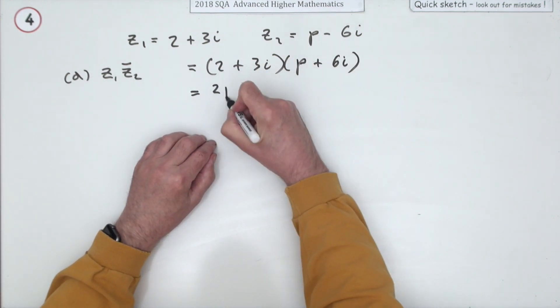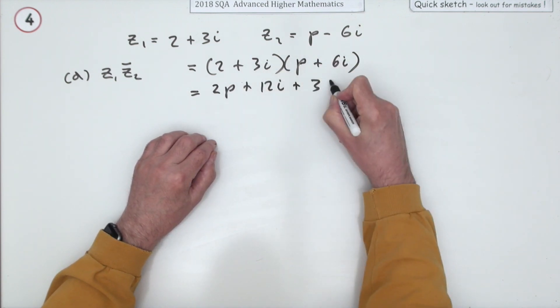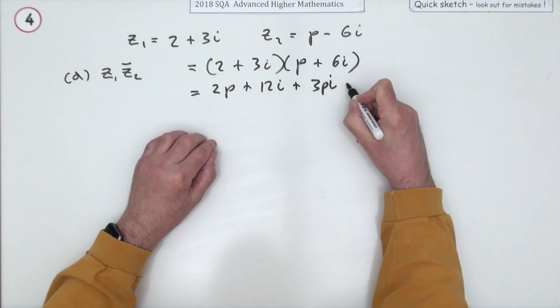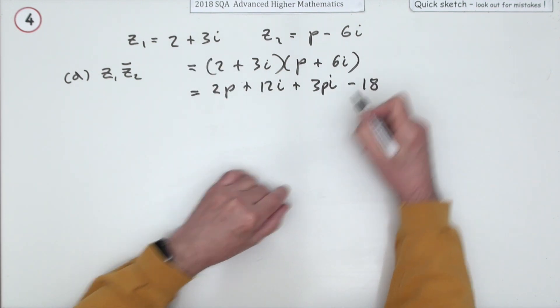It'll be two times P plus 12 I plus three P I. Three sixes are 18, but I squared is negative one, so minus 18.